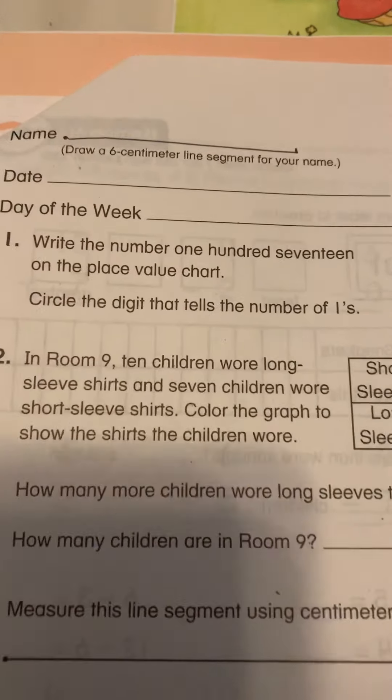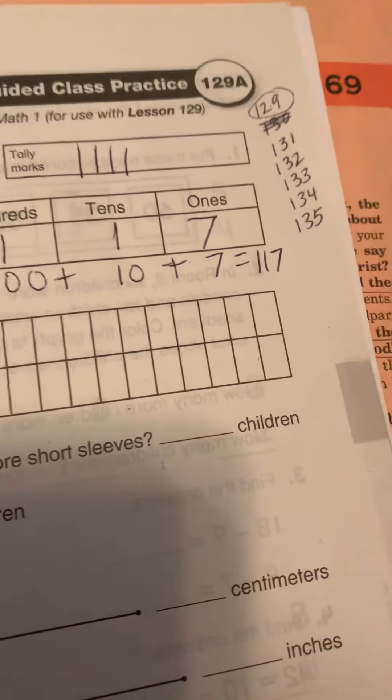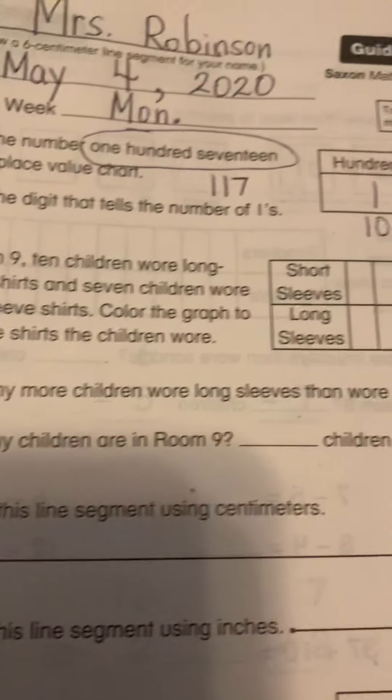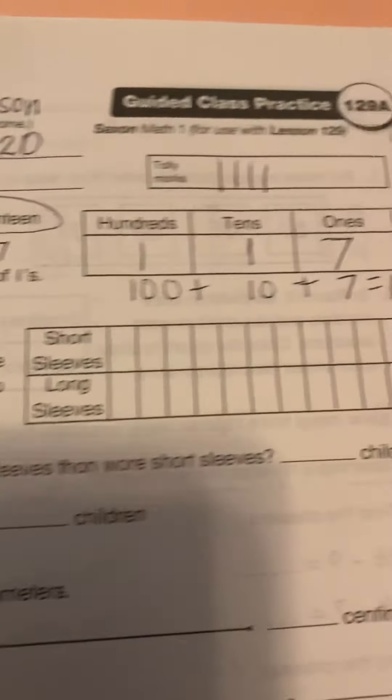117 is 100 plus 10 plus 7. That equals 117. And we're supposed to circle the digit that tells the number of ones. There are seven ones in 117.